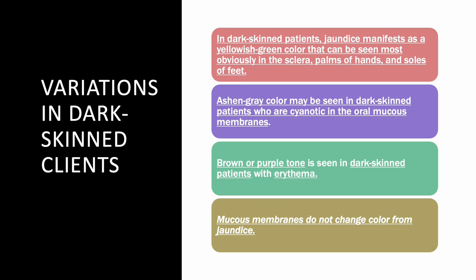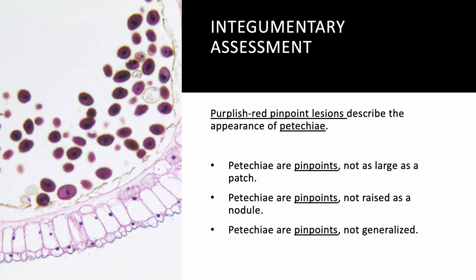For dark-skinned patients, color variations differ when referring to erythema, cyanosis, and jaundice. Mucous membranes do not change color with jaundice — period. Erythema in a darker patient presents as brown or purple in tone. Cyanosis appears as ashen gray and may also be visible in the oral mucosa. For jaundice in darker-skinned patients, look for a yellowish-green color, most obviously in the sclera, palms of the hands, and soles of the feet.